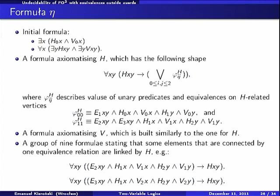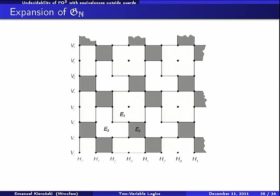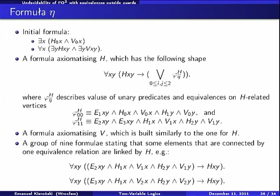And now, what will be said by our formula? So our formula captures some properties of this expansion of the standard grid. So it says that there exists the elements of coordinate zero, zero. And it explicitly says that every element has a vertical and a horizontal successor. So this is this initial fragment. We have a formula which axiomatizes grid relation H, which has the following shape. It simply says that if a pair of element is connected by H, then this element satisfy some formula, which here we have an example.